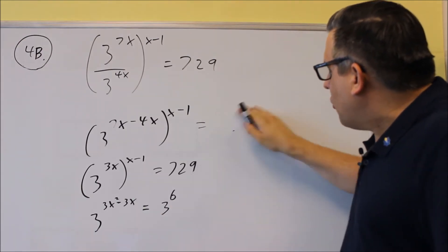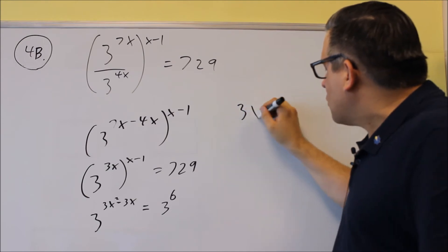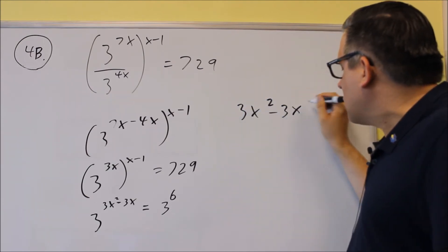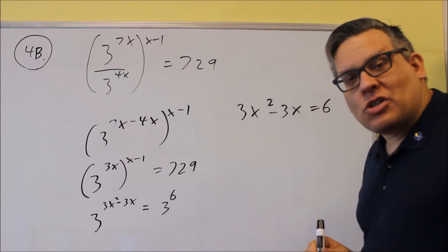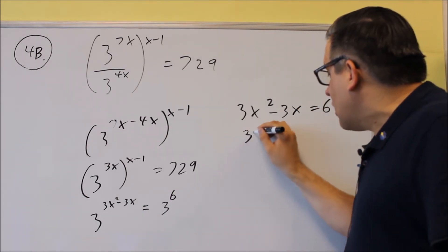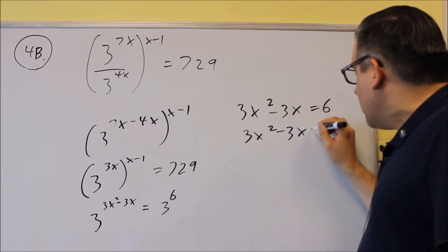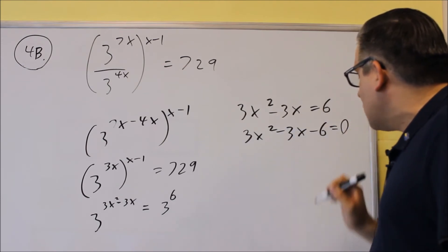Let me erase this right here so we have some space. 3x squared minus 3x equals 6. Set the exponents equal. And then, as always, you want to set it equal to 0, so let's subtract the 6 to equal 0.